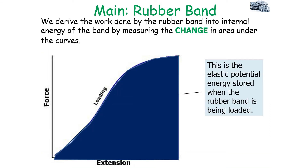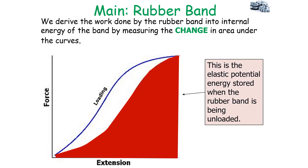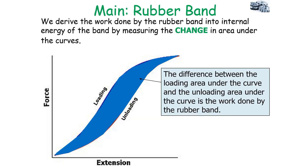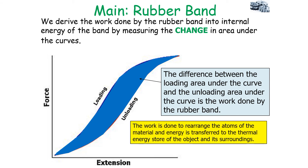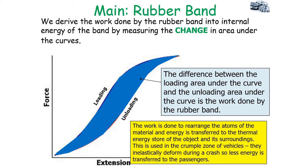We derive the work done by the rubber band, and how much has changed in the internal energy of the band, by measuring the change in areas under the curve — the elastic potential energy stored during loading versus unloading. The difference between the loading area and the unloading area is the work done by the rubber band to rearrange the atoms, and energy is transferred to the thermal energy store of the object and its surroundings. This principle is used in the crumple zones of vehicles, which inelastically deform during a crash so less energy is transferred to the passengers.